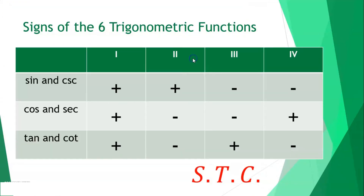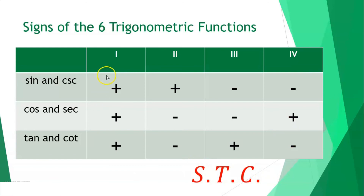Signs of the six trigonometric functions by quadrant: In quadrant I, all functions are positive. In quadrant II, only sine and cosecant are positive. In quadrant III, only tangent and cotangent are positive. In quadrant IV, only cosine and secant are positive. Use the mnemonic ASTC: All, Sine, Tangent, Cosine — indicating which functions are positive in each quadrant.